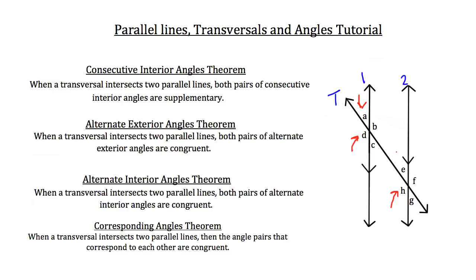A and E are exactly like each other, so A and E are corresponding angles and therefore congruent. A and C are also congruent because of vertical angles, and E and G are congruent because of vertical angles. You'll also note that B and F are corresponding angles — they look exactly like each other. Take a look at the opening of those angles; it's identical. So pay attention to corresponding angles when dealing with parallel lines and transversals.